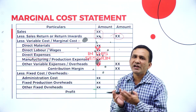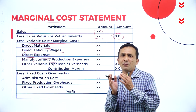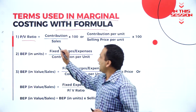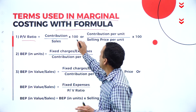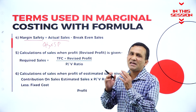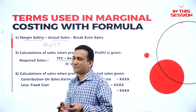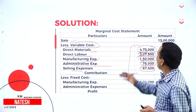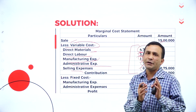Manufacturing or production related variable items or variable expenses are given, and we need to consider these here. The PV ratio formula is contribution divided by sales into 100. If you subtract actual sales minus breakeven sales, you can easily find the margin of safety. If the value basis is given, we consider value; if cost per unit is given, we write contribution per unit.